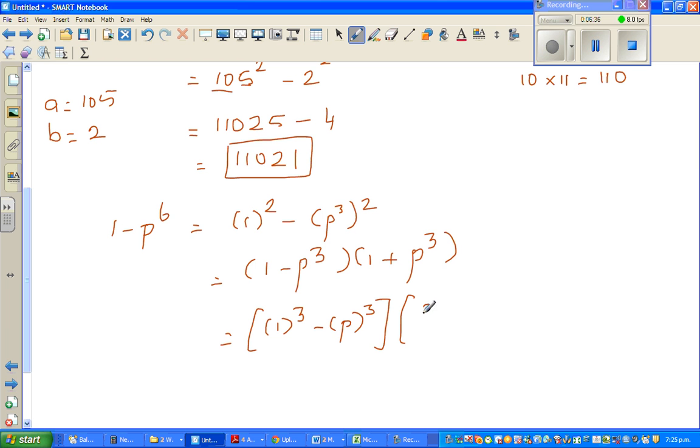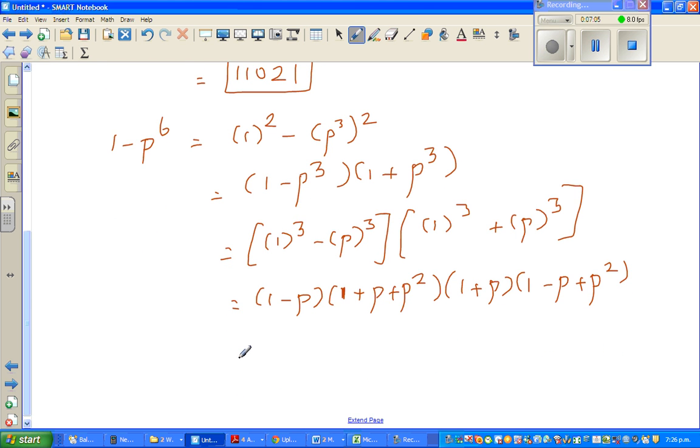And this bracket I can write 1 squared is 1, I'm directly using the formula, and then you have to plus here, 1 times p is p plus p squared, and this factorizes to 1 plus p times 1 minus p plus p squared. So writing in a better way, so this is nothing but 1 minus p times 1 plus p times 1 plus p plus p squared, and 1 minus p plus p squared.